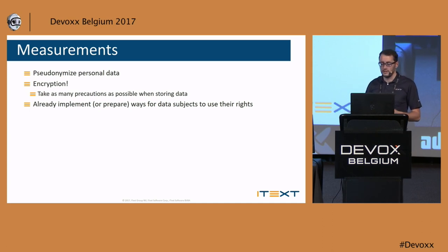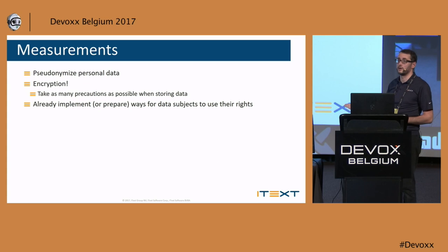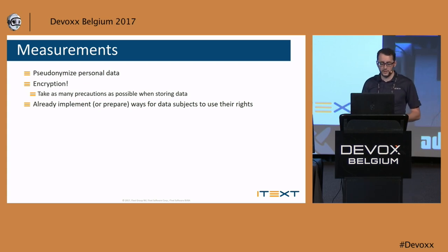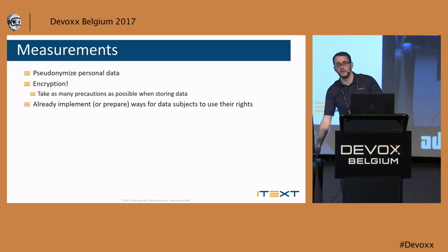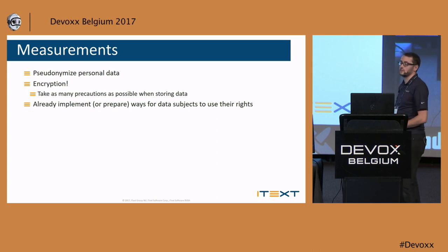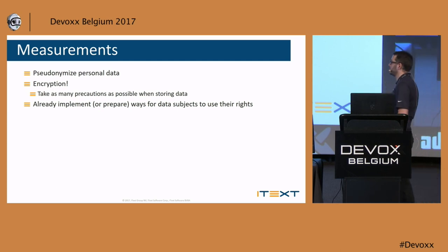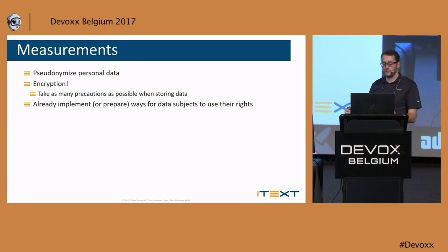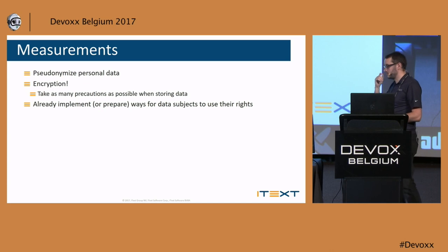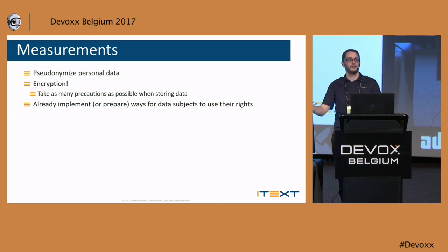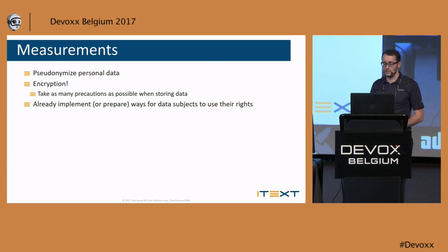Take as many precautions as possible when storing data — don't go so overboard that it's no longer feasible to work with your data, but it should be encrypted. The last step is to already implement or prepare ways to guarantee that data subjects can exercise their rights: access, updating, and deletion. These don't need to be in the application itself — there just needs to be a formal process allowing the user to identify themselves and get, update, or delete their data.